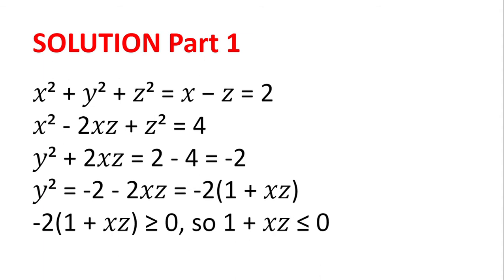Now, we can take this and subtract that from x squared plus y squared plus z squared equal to 2 to get y squared plus 2xz equal to 2 minus 4 which is equal to minus 2. And we can rewrite that as y squared is equal to minus 2 minus 2xz which is equal to minus 2 multiplied by 1 plus xz.